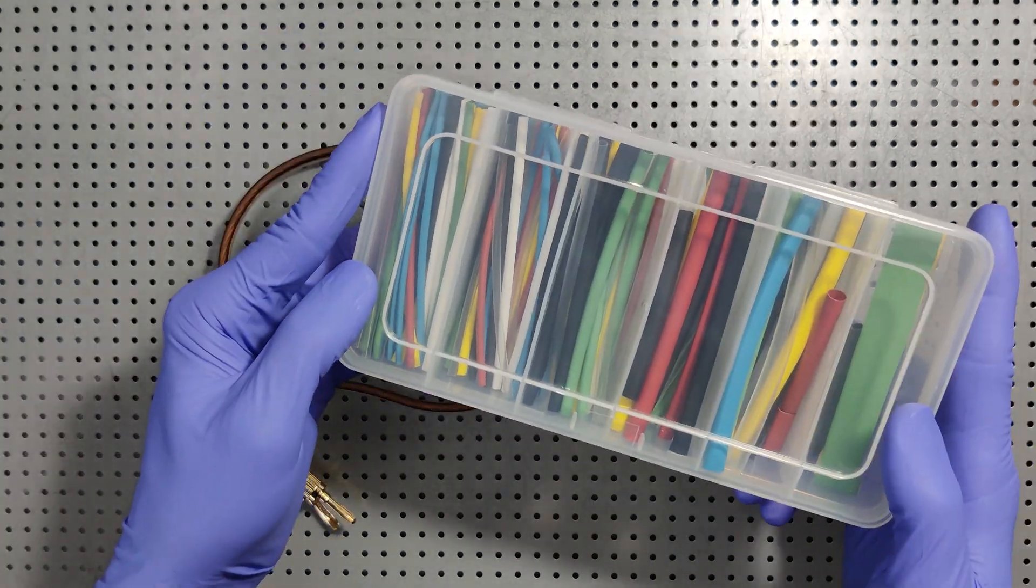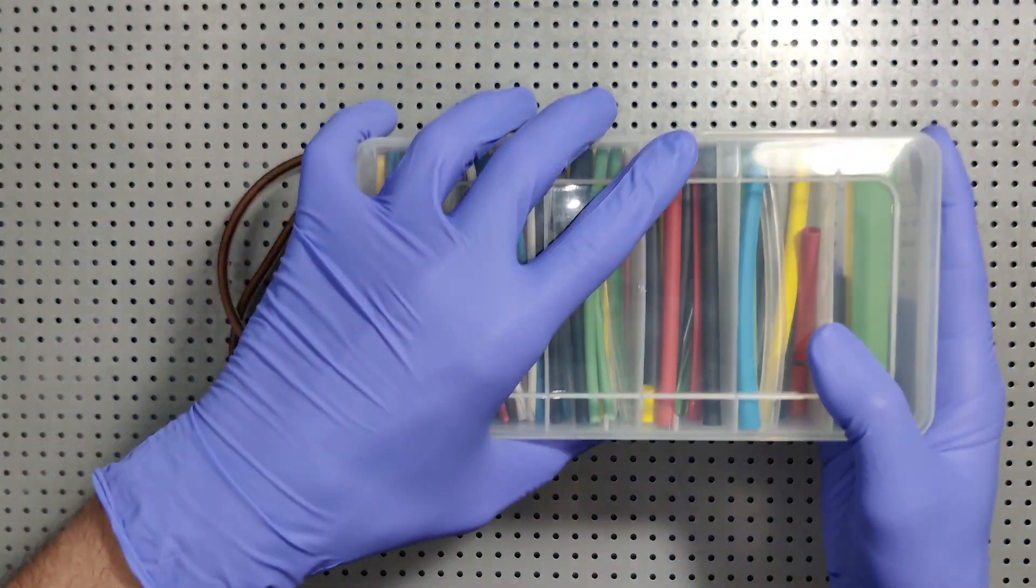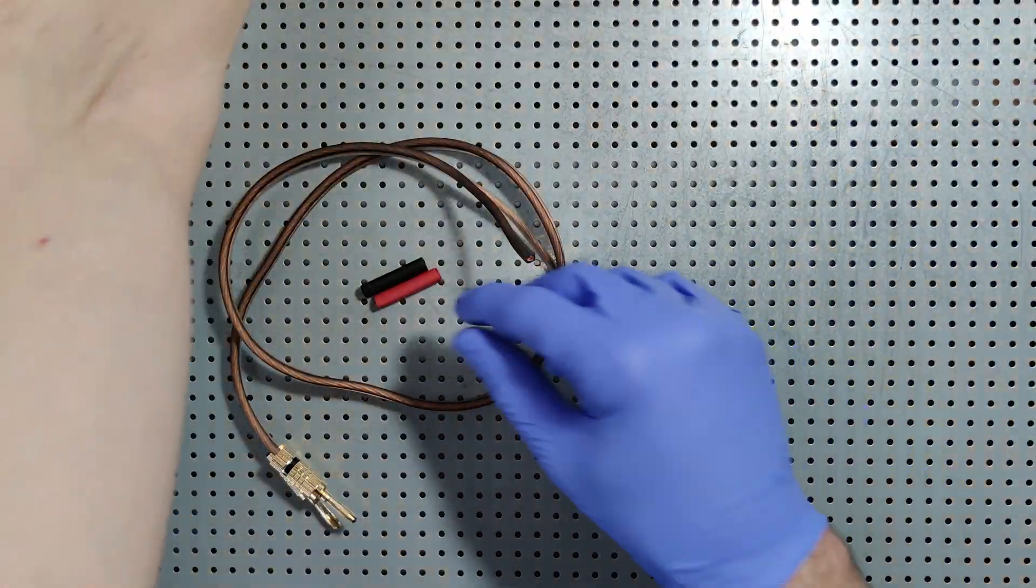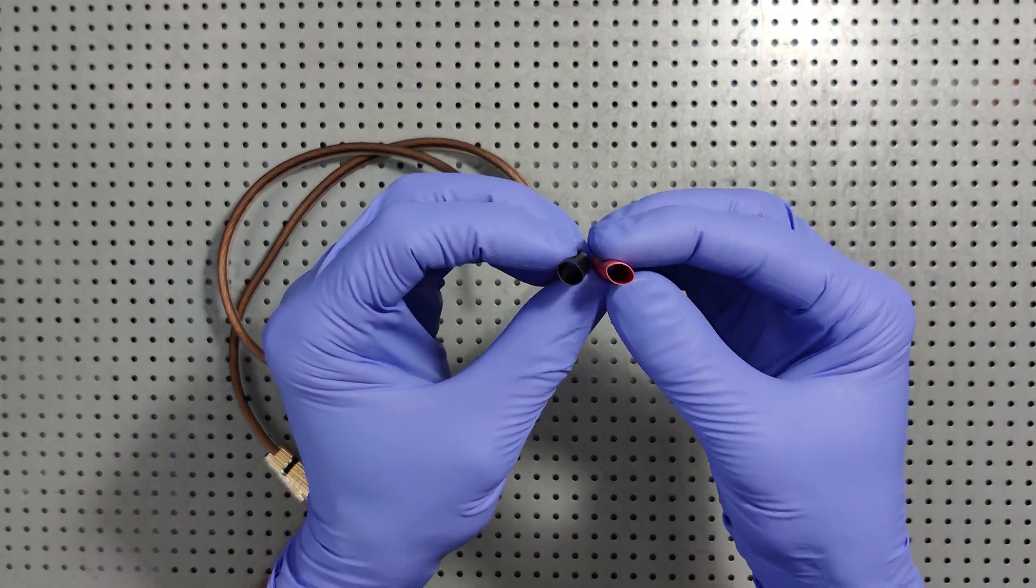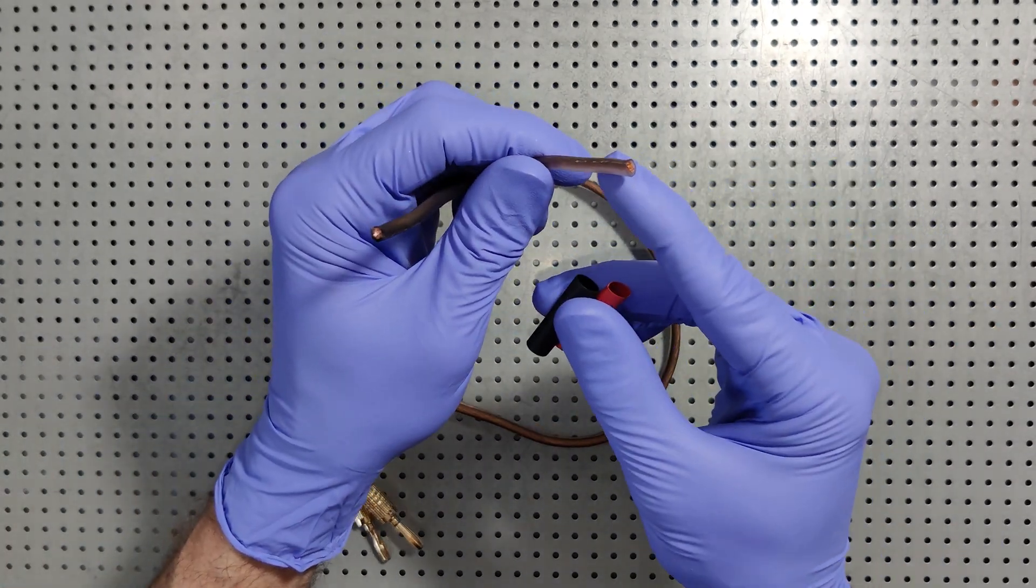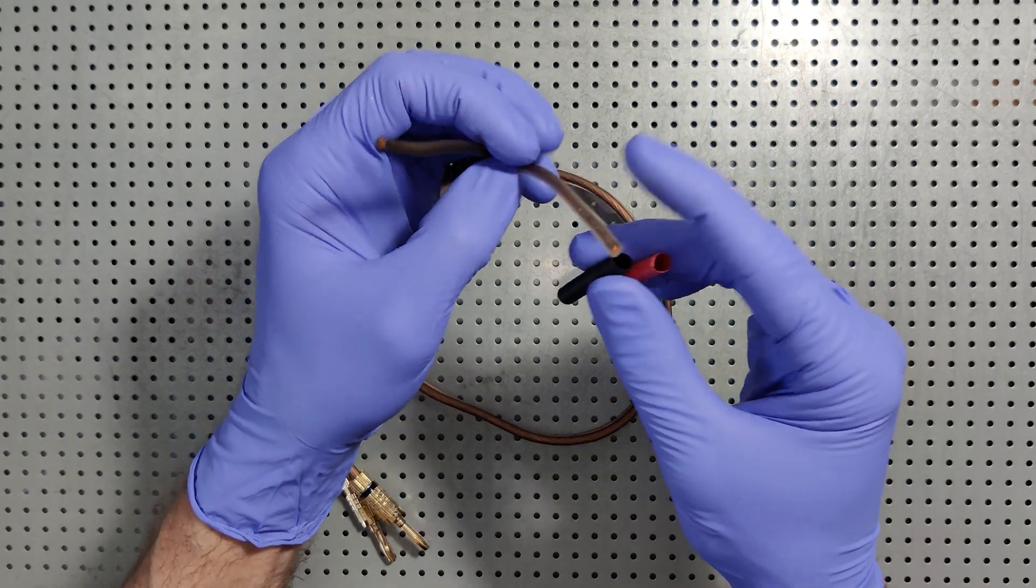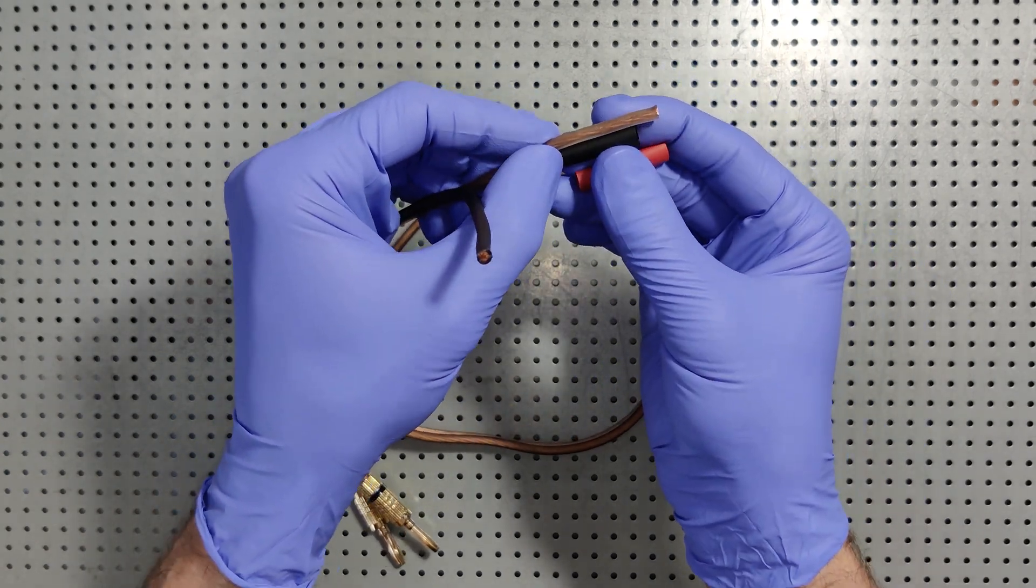First thing you want to do is choose the right size heat shrink. I've got various different sizes in this container and I've picked two that are a good size that give me a little bit of work room with the copper cable itself and enough that it will shrink down to size when I'm done.